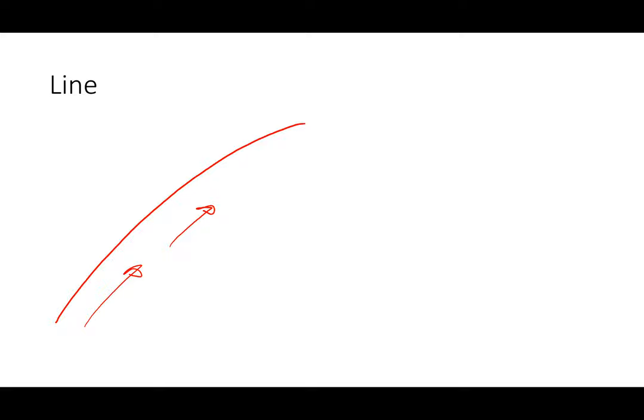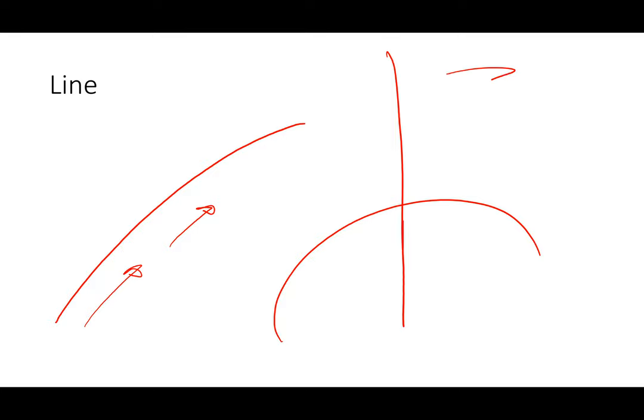Line. We start with the element of lines. The definition of a line is a mark that shows the distance between two points. A line has width, length, direction — so where is it going — is it curved or straight, abstract, and somewhere in between.